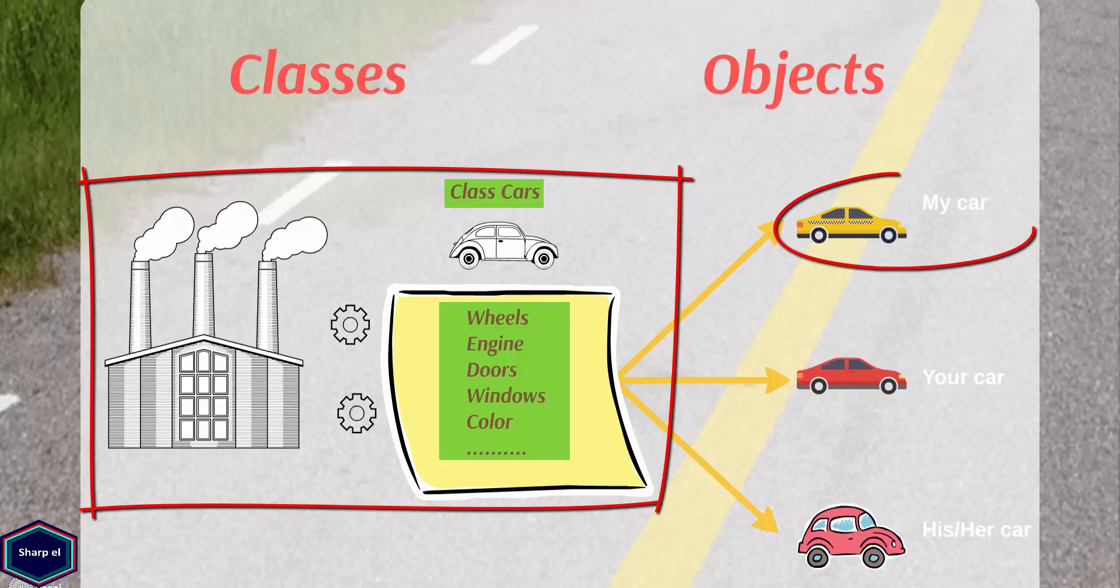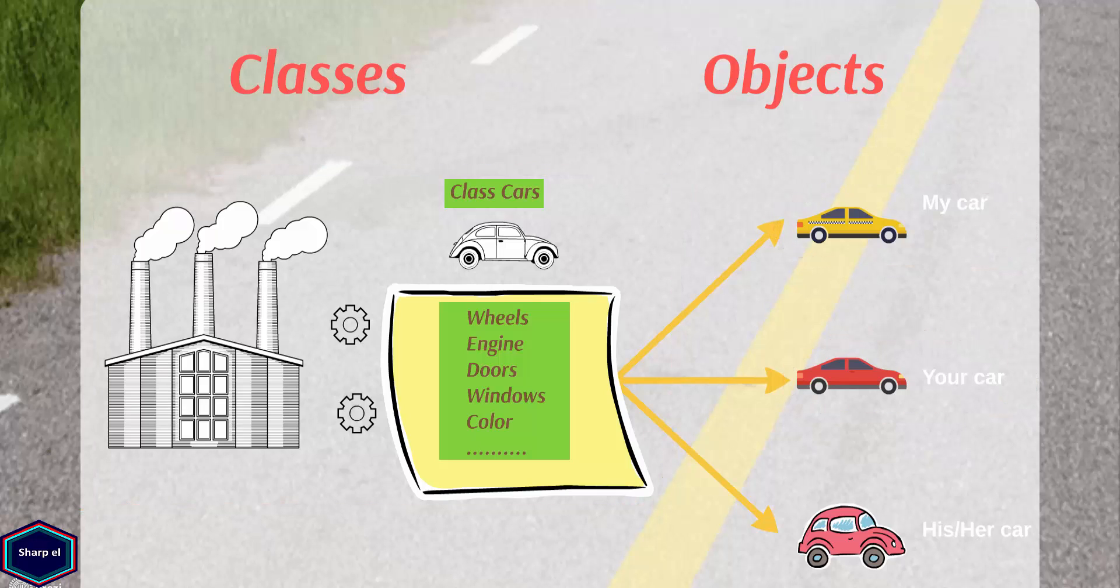Now my own car is an object and also an instance of class cars. Similarly, your car is also another object and also an instance of class cars. So the class cars describe the concept of what a car is and concrete cars are objects, an instance of class cars.